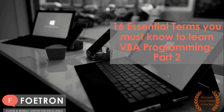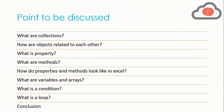This video is the continuation of Part 1. In Part 2 we will discuss: what are Collections, how objects are related to each other, what is Property, what are Methods, how Properties and Methods look in Excel, what are Variables and Arrays, what is Condition, and what is Loop. We will end with a conclusion.